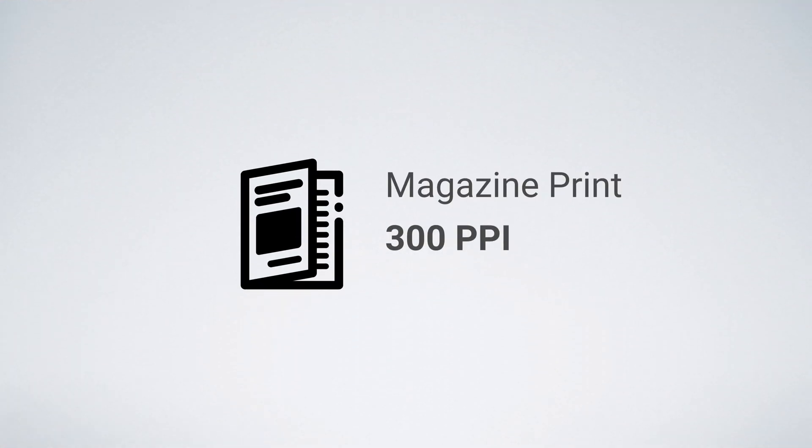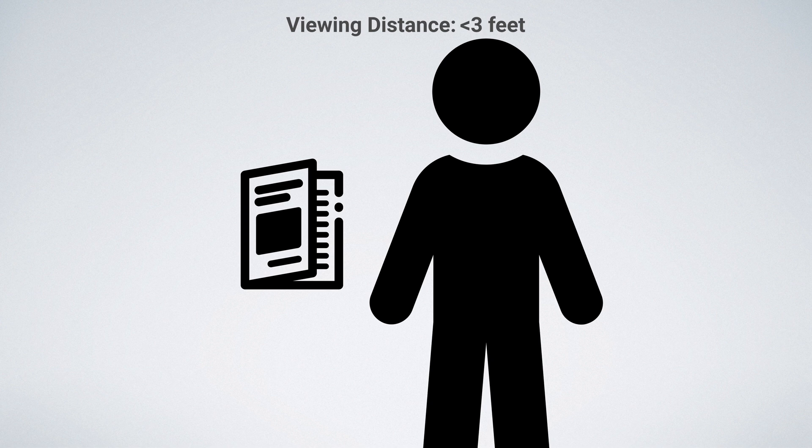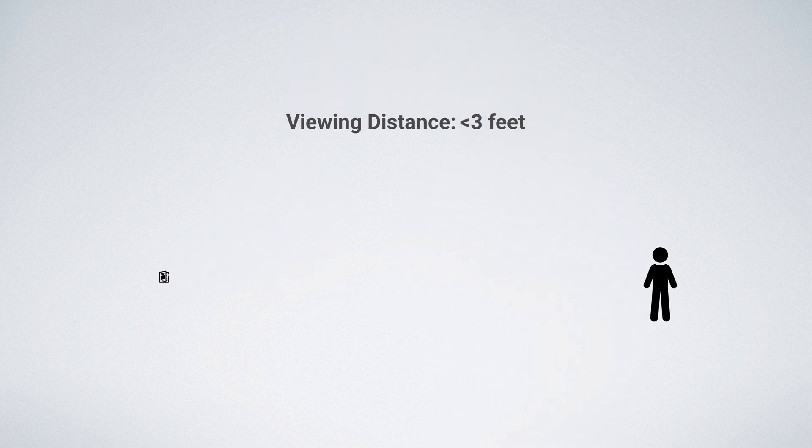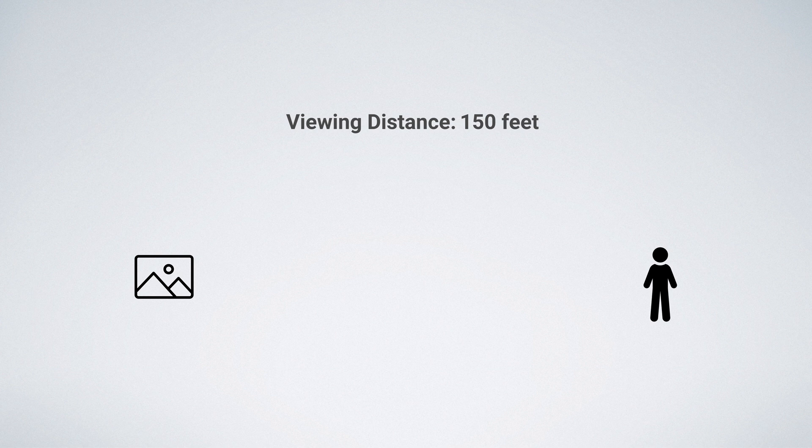High quality magazine prints often have a PPI of 300. However, these images are smaller and being viewed up close. If people are going to be viewing your image from farther away, then you can use a lower PPI such as 200, 150, or even 100 and your print will still look sharp.